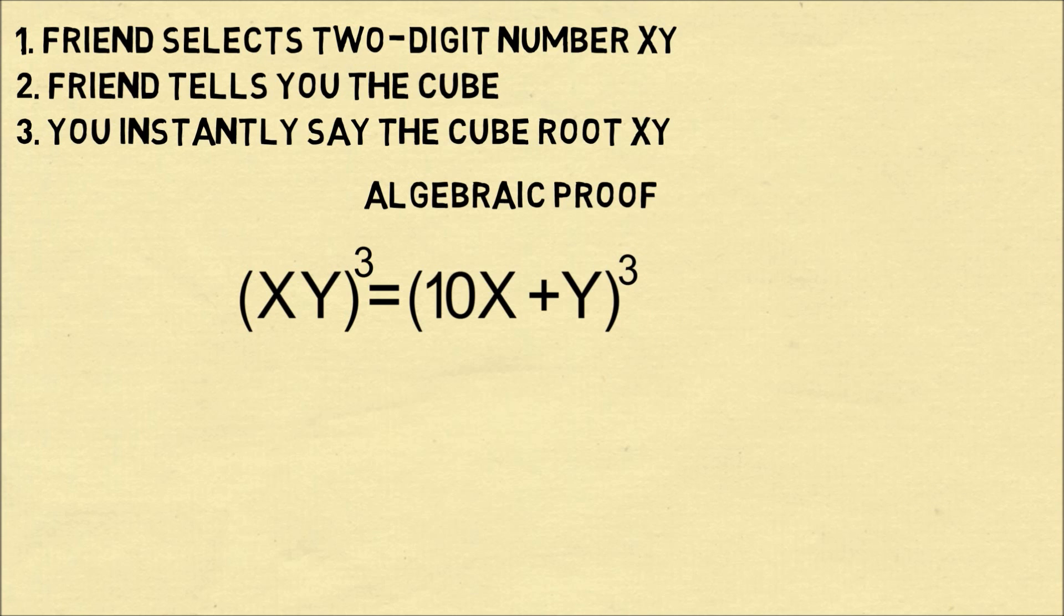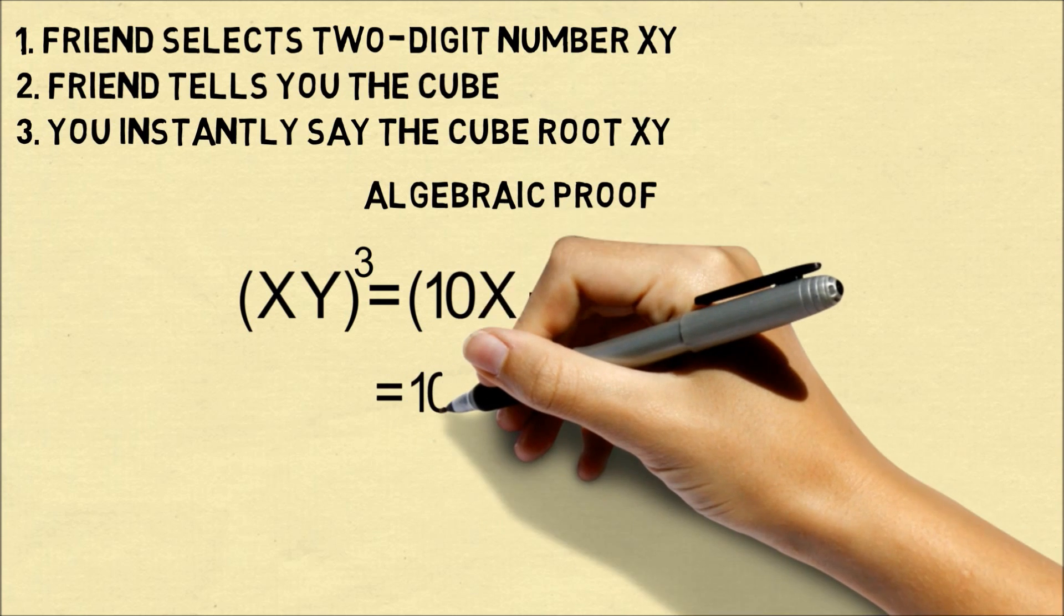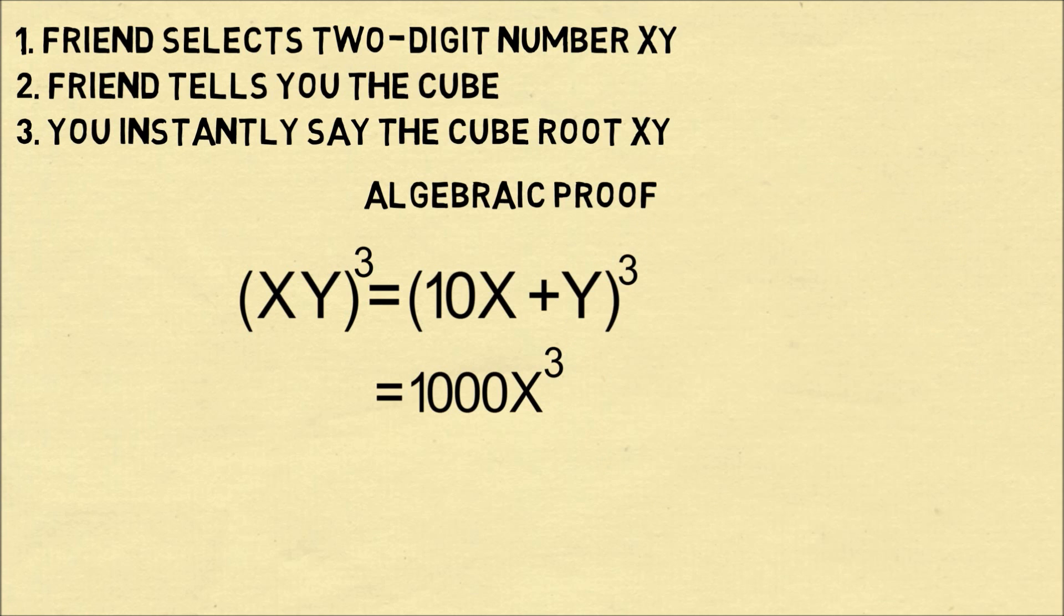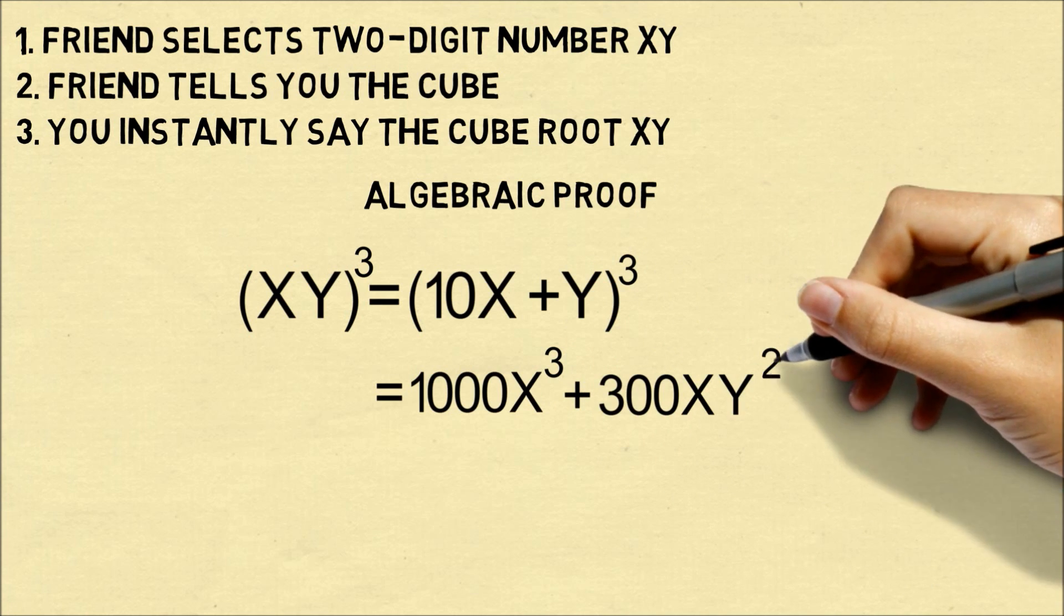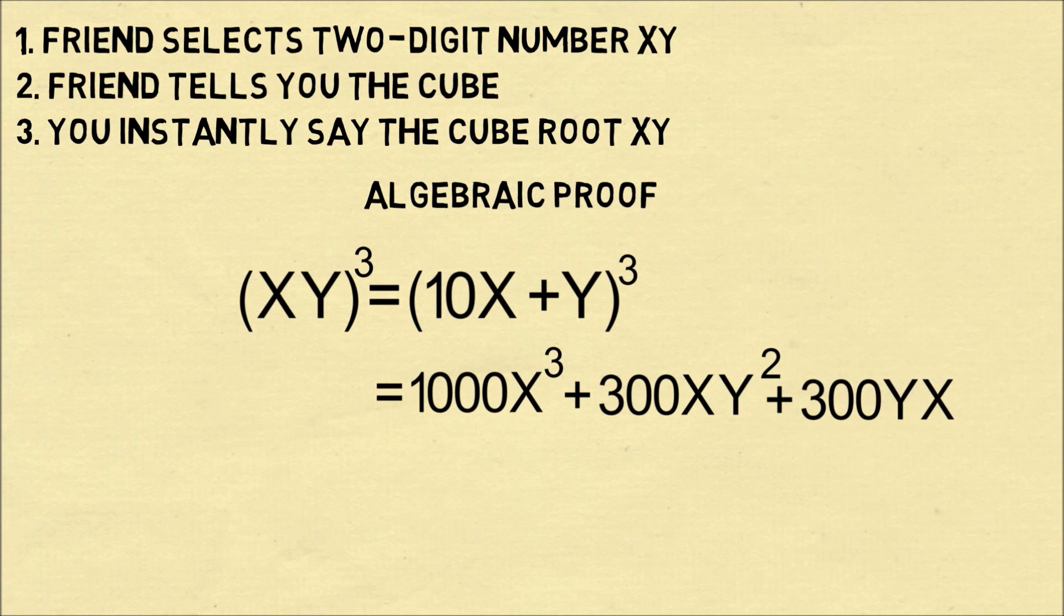When we cube the number, if we expand out the terms, we have 1000x³ plus 300xy² plus 300yx² plus y³.